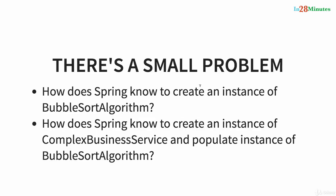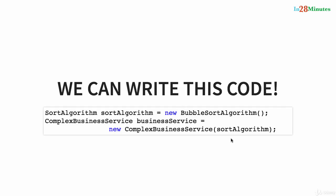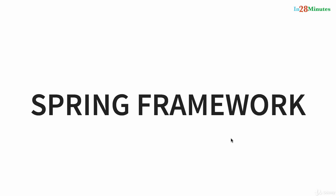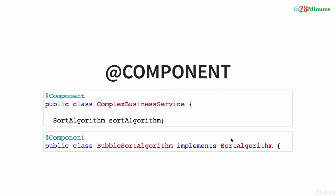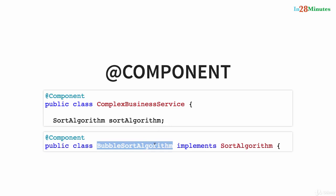The questions are: how does Spring know it needs to create an instance of BubbleSortAlgorithm? How does Spring know it needs to create an instance of ComplexBusinessService and populate it with the BubbleSortAlgorithm instance? You as a programmer need to help Spring identify what objects it needs to manage and what their dependencies are. There are two important annotations using which you can tell Spring this information. The first annotation is `@Component`. We put `@Component` on top of ComplexBusinessService and BubbleSortAlgorithm, telling Spring to start managing instances of these classes.